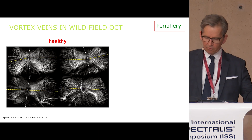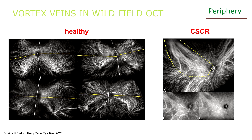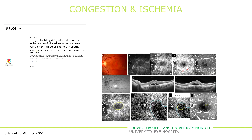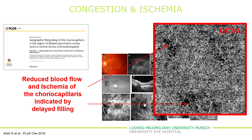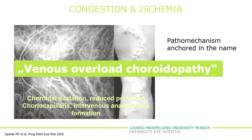And if you go from the center to the periphery, it becomes even clearer. We see symmetry of the vortex veins in healthy eyes and asymmetry in patients with central serous choroidal retinopathy — this prominent superotemporal vortex vein indicates that this vein is not working sufficiently. The consequence of these congestions: dilated vortex veins lead to choroidal vein congestion and, furthermore, to reduced blood flow, ischemia of the choriocapillaris, which can be indicated by delayed filling in OCTA — you see these black spots. Due to this congestion, Spade and colleagues recommended renaming this disease as venous overload chorioretinopathy, in order to anchor the pathomechanism in the name.